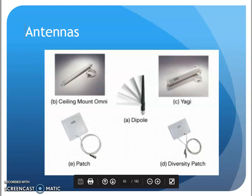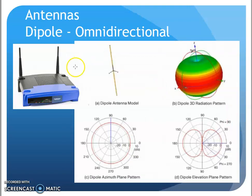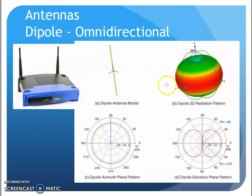Looking at antenna styles, there are radiation pattern diagrams showing how energy is transmitted. A dipole antenna — like the typical home router — broadcasts in a squashed beach ball or donut shape, going out 360 degrees. It's not perfectly round but goes out in all directions. That is the typical dipole radiation pattern.